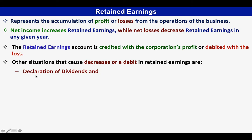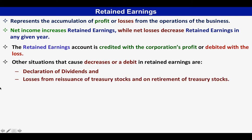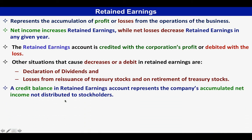The first situation that debits retained earnings is the declaration of dividends — if the corporation will pay dividends, we will debit retained earnings. The other situations are losses from the reissuance of treasury stocks and on retirement of treasury stocks. From previous discussions we have learned that treasury stocks may result in losses in terms of reissuance and retirement.